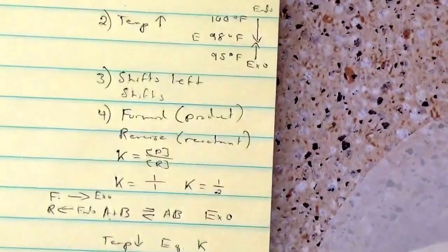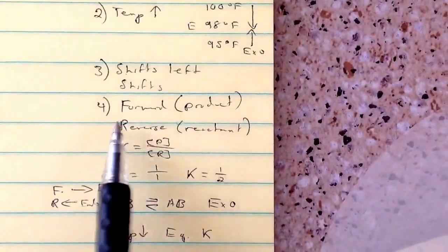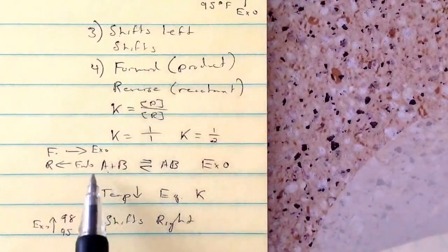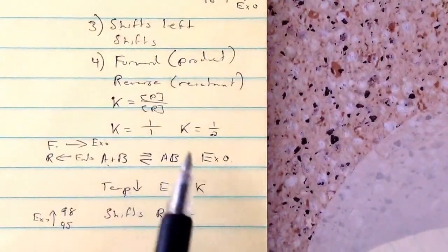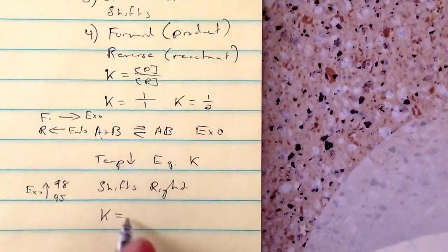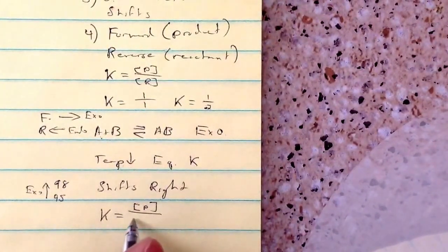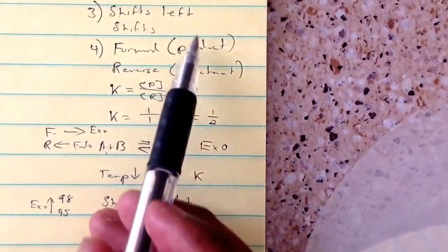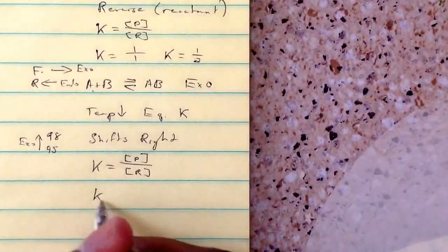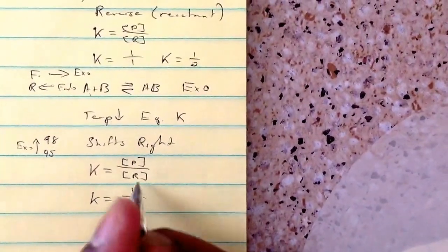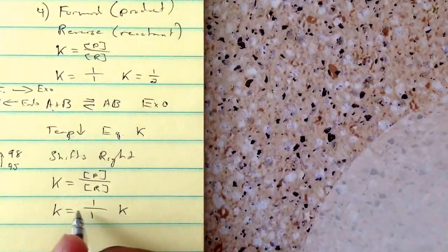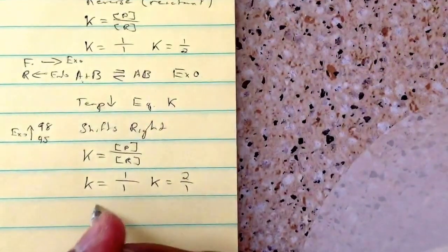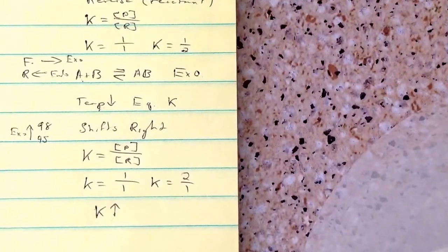Finally, determine what happens to K. Since it's the forward reaction, it's product-favored, meaning more products are created. Using K = products over reactants, if products increase from 1 to 2 with reactants staying at 1, then K increases from 1/1 to 2/1, so K is increasing.